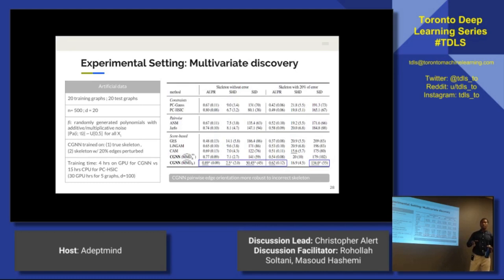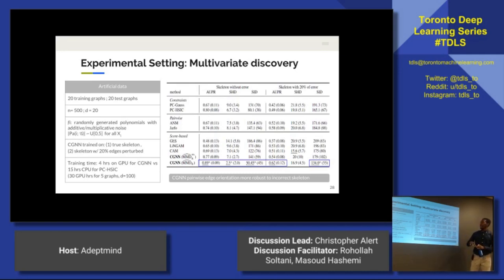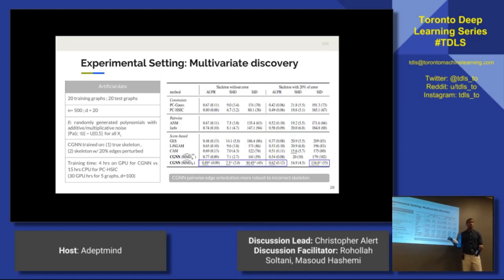The last example was the bivariate case. In the case of 20 variables, they evaluated on some artificial data in two cases: one where you provide the algorithm with the true skeleton — since this was artificially generated data, you know exactly what those relationships of dependence are — and also where there was 20% error in the skeleton.